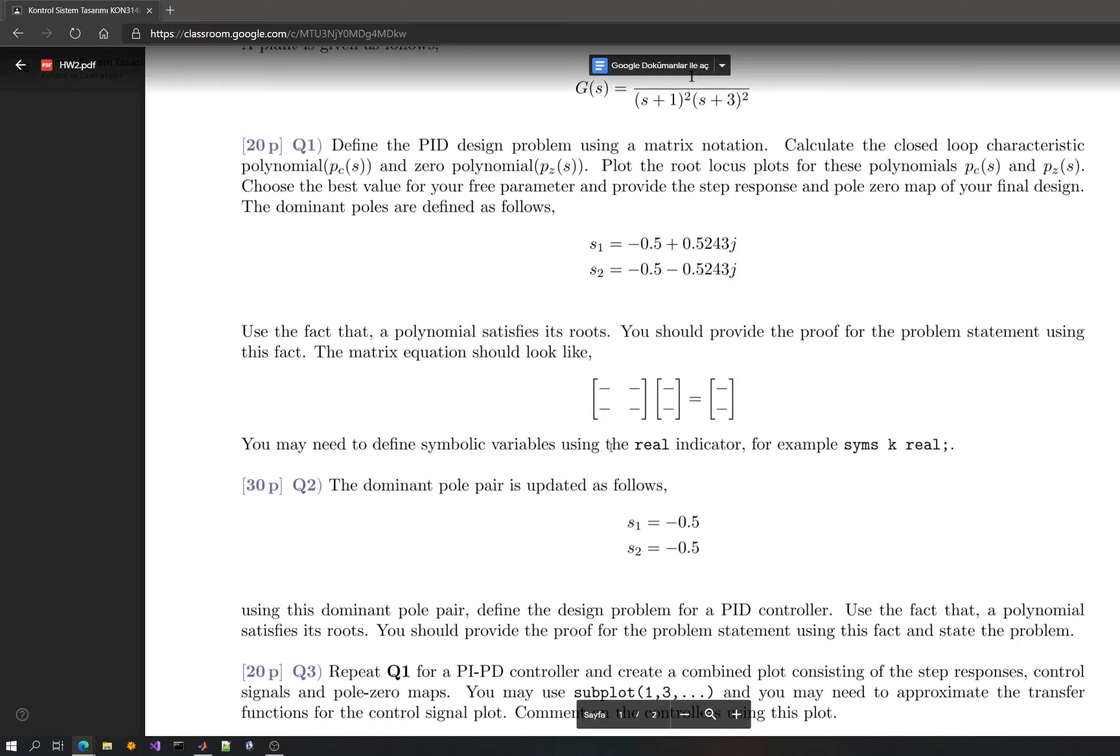To ease and give you another hint, you might want to define all your controller parameters using syms K real, because you might experience some problems if you do not do this. KP, KI, and KD should be defined with syms K real.